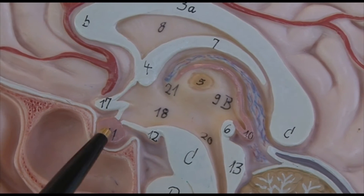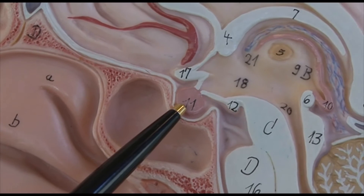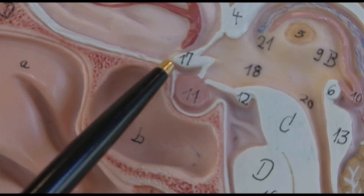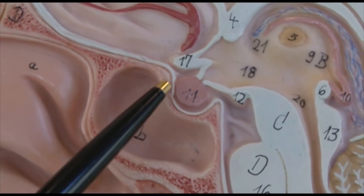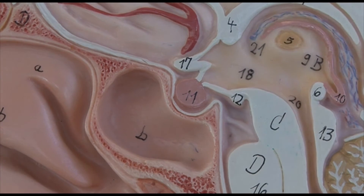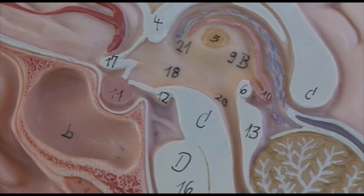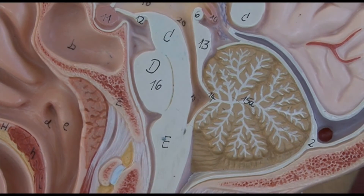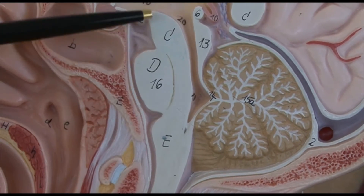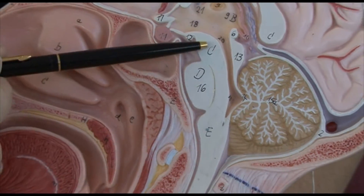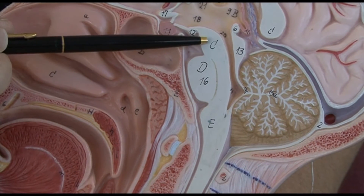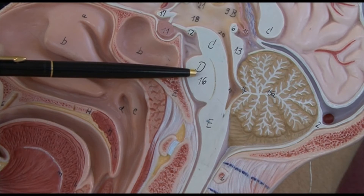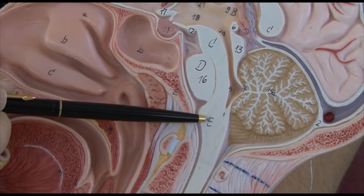Here we see the pituitary gland, located in the pituitary fossa of the skull. The brownish area in this model is the cerebellum. And this area is the brainstem — we see the midbrain, the pons, and the medulla oblongata.